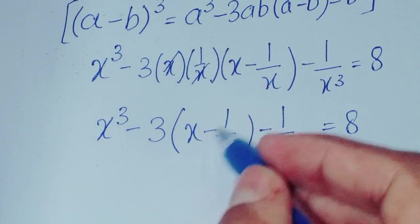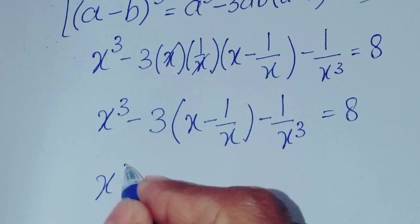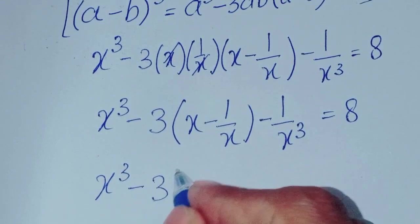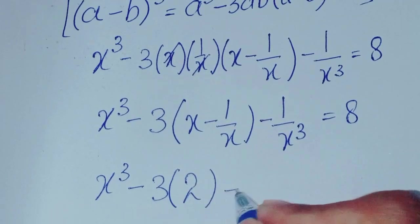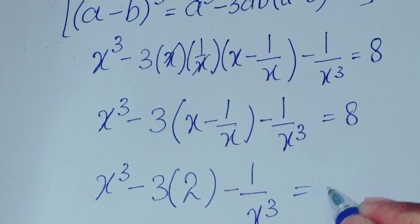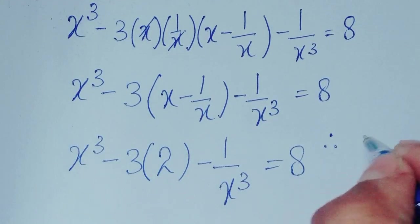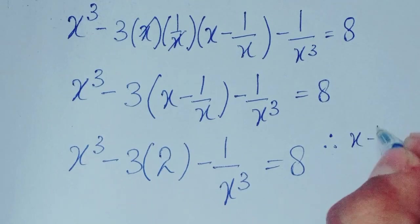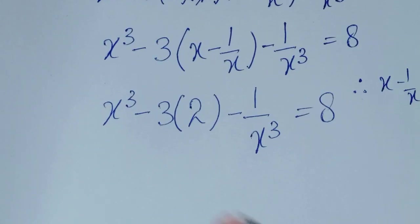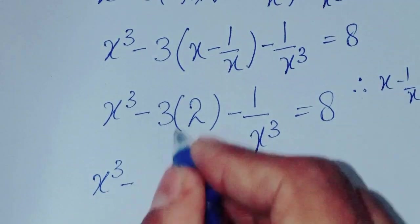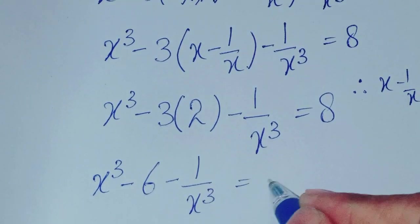Now, given that x minus 1 over x equals 2, we substitute this value: x cubed minus 3 times 2, minus 1 over x cubed, is equal to 8. That gives us x cubed minus 6 minus 1 over x cubed equals 8.